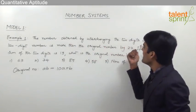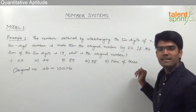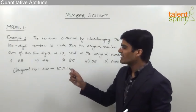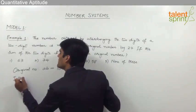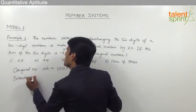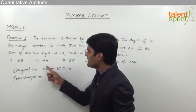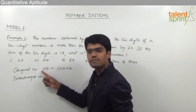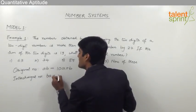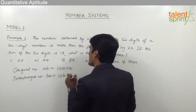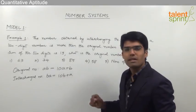Now, the number obtained by interchanging the two digits of AB would be BA — because B moves to the tens place and A comes to the units place. This two-digit number BA should be taken as 10B plus A, since B is now in the tens place (multiplied by 10) and A is in the units place (multiplied by 1).